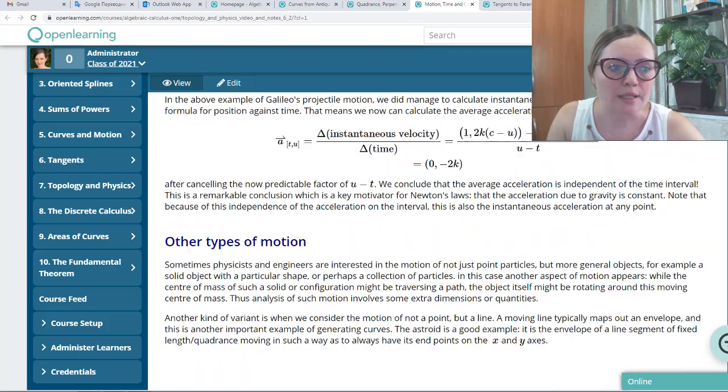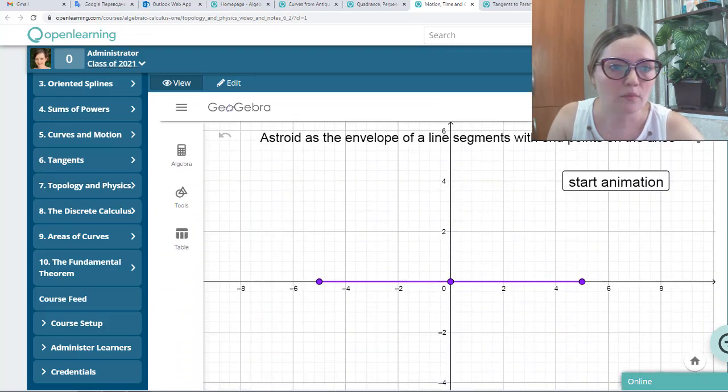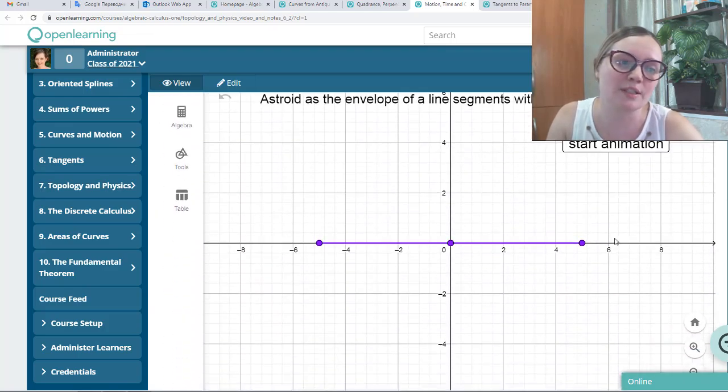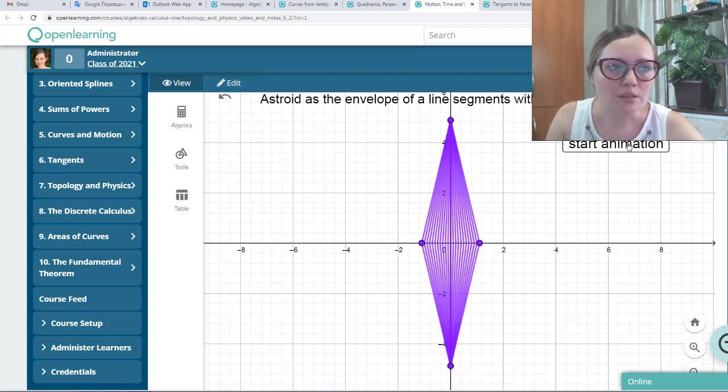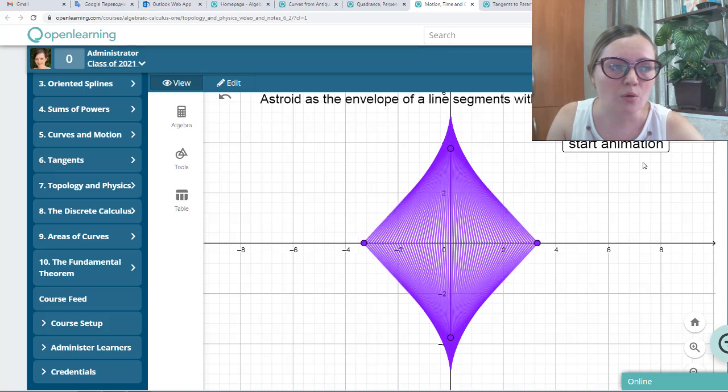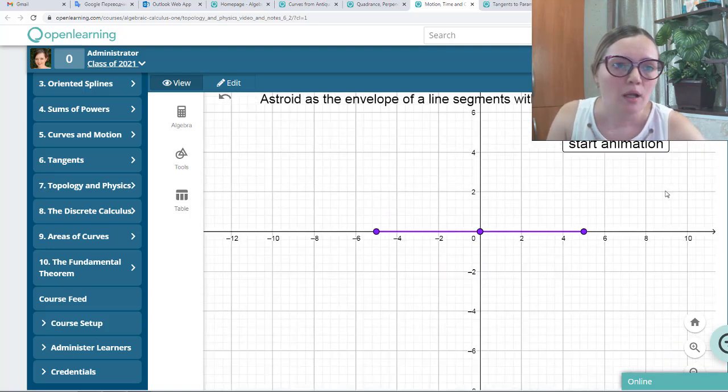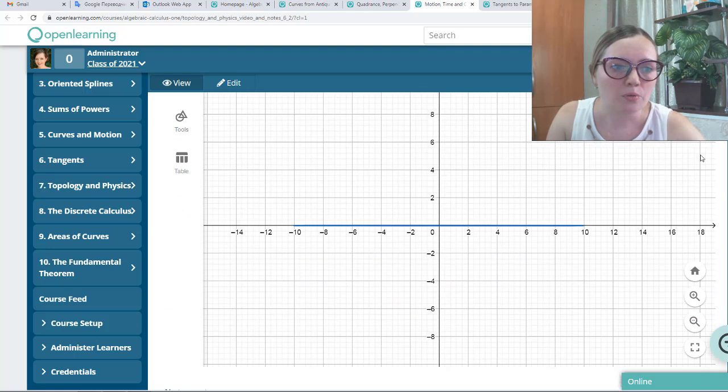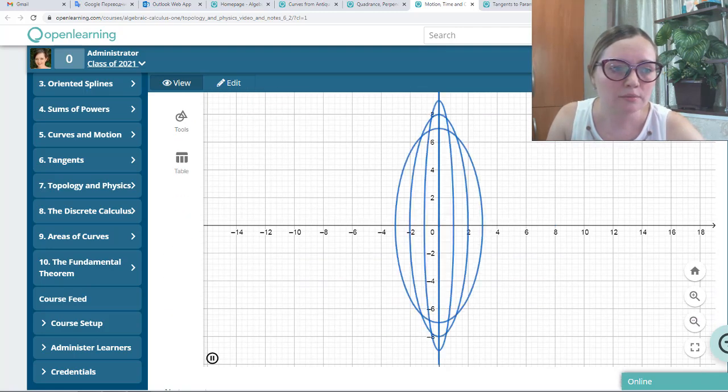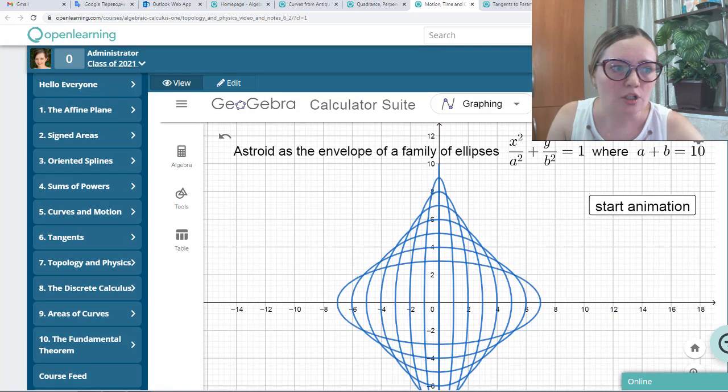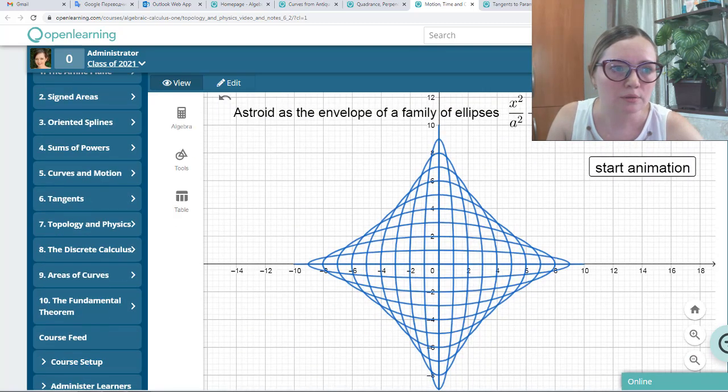At some applications, you can affect the process in the animation or in the picture. Another example - this is just animation, but you can start it again. This is construction of asteroid by envelope. Another example of animation is here - construction of asteroid and envelope of the family of ellipses.